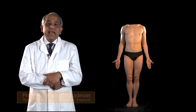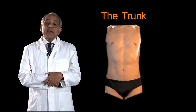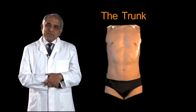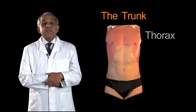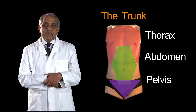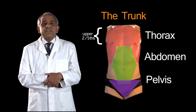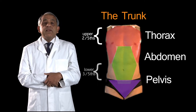Picture if you can the human body with its head and neck missing and the four limbs removed. What you have left is the trunk. The trunk of the human body is made up of three parts from above downwards: these are the thorax or chest, the abdomen, and the pelvis. The thorax makes up the upper two-fifths approximately of the trunk, and the lower three-fifths is made up of the abdomen and the pelvis.